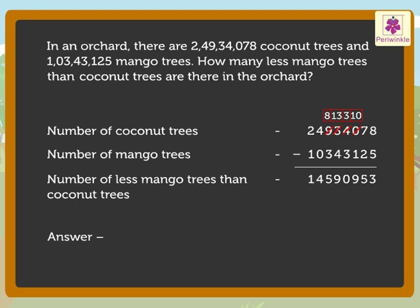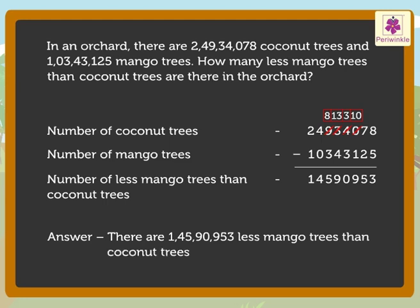Thus there are one crore forty five lakh ninety thousand nine hundred fifty three less mango trees than coconut trees in the orchard.